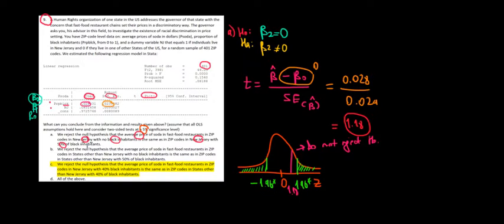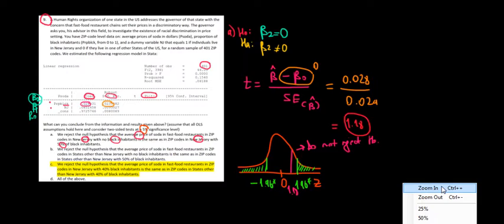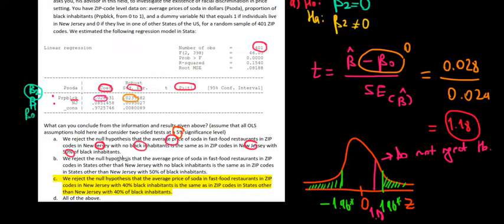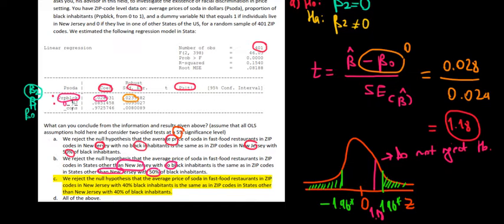Part B asks whether we reject the null hypothesis that the average price of soda in states other than New Jersey with no black inhabitants is the same as in states other than New Jersey with 50% black inhabitants. Here the dummy variable equals 0 in both cases, so we're again testing the effect of the proportion of black people — the same test as part A. We reach the same conclusion: we do not reject that hypothesis, so both A and B are false.